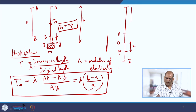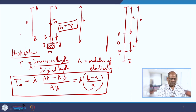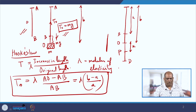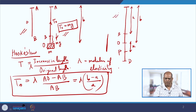Let P be the position at any time T such that OP is equal to some X. This length is A, this length is B. This is the first configuration where we have only the natural length of the string; the second where a mass M is attached; and the third where you have pulled it to point D and let it go, and it is oscillating.